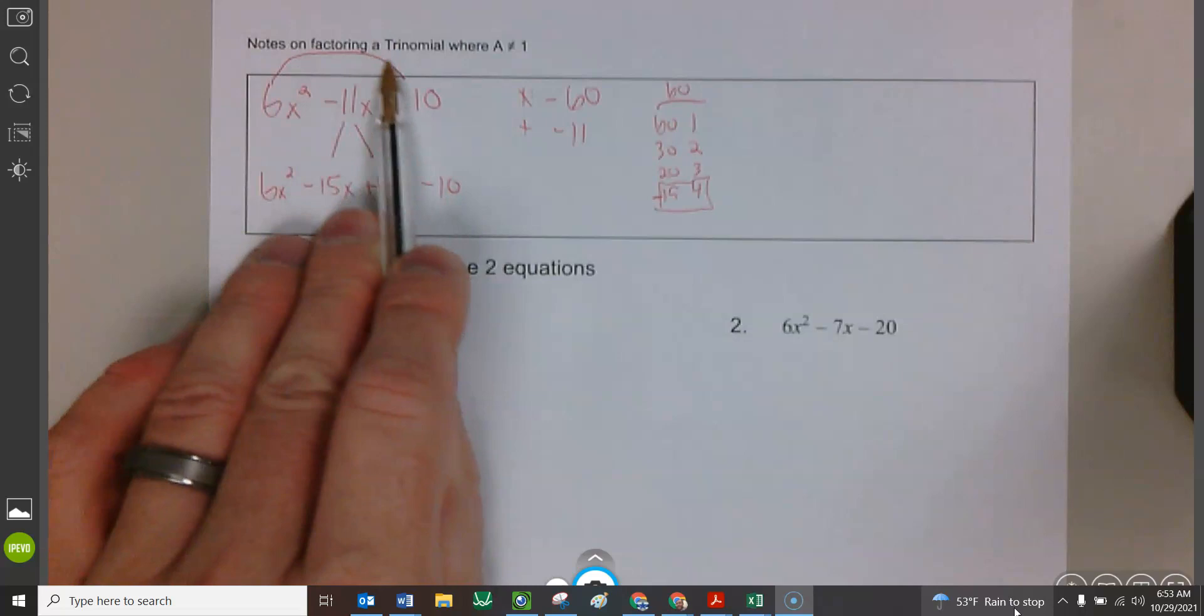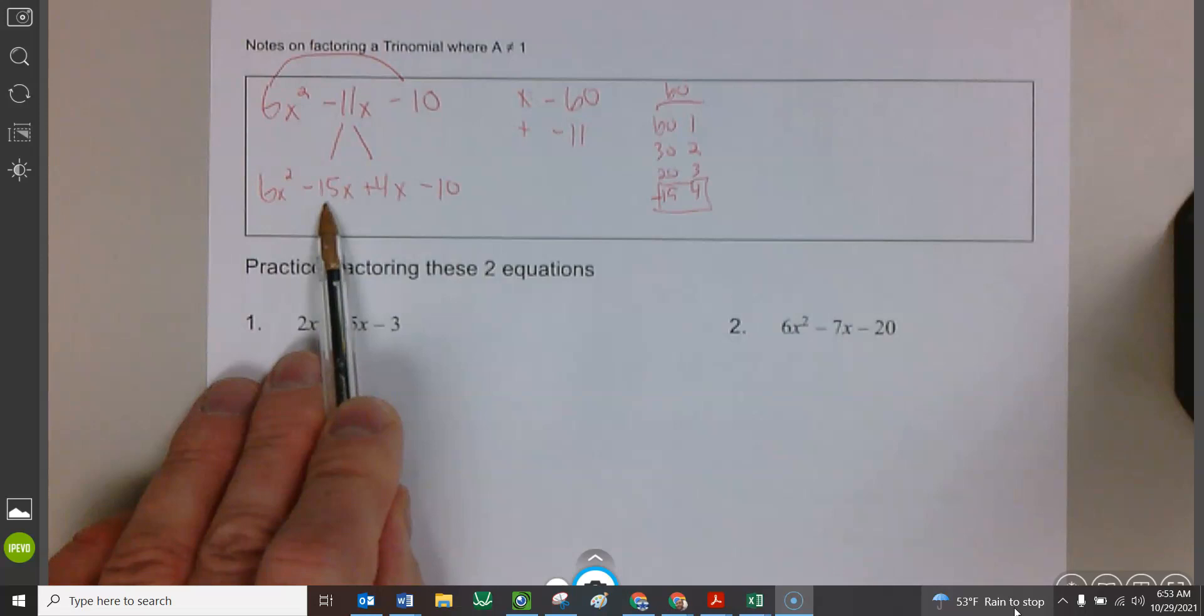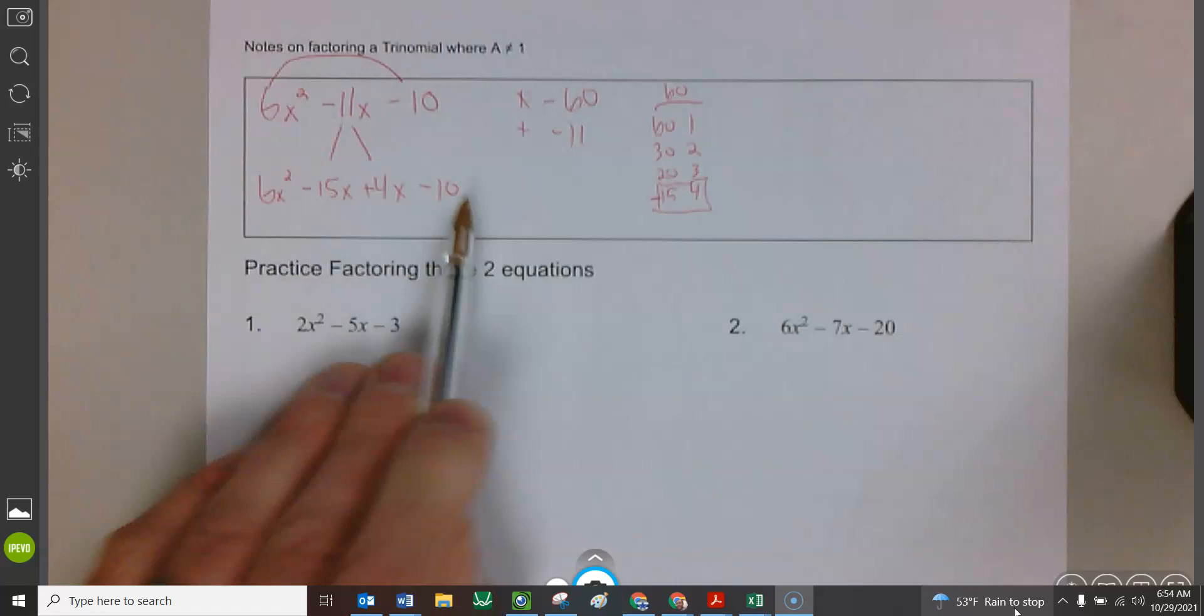Find two numbers that multiply to this one, negative 60, and add to this one. Replace that middle term with two of those two numbers you just found. And let's check it real quick. Like negative 15x's plus 4x's, that's negative 11x's. I haven't broken any math rules. I'm just being smart about how I'm breaking these things up. Now it's a grouping problem, right?